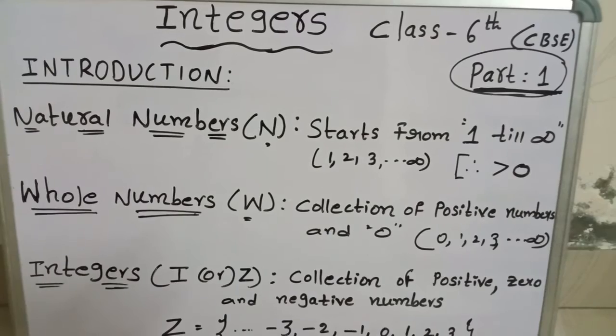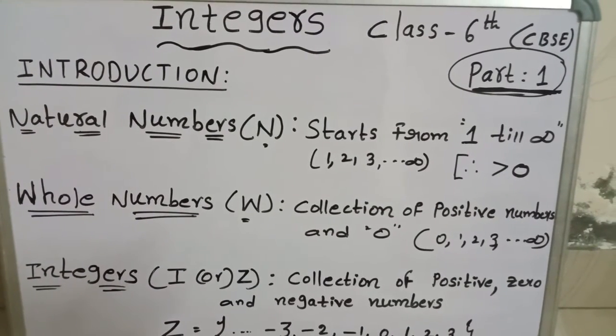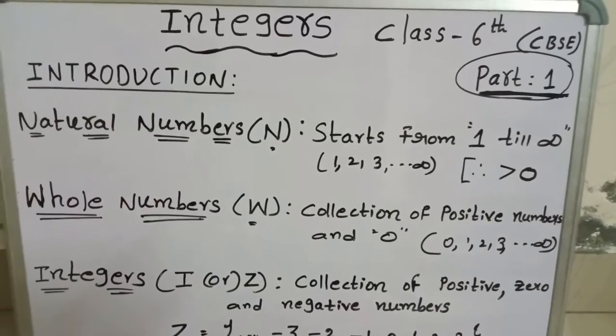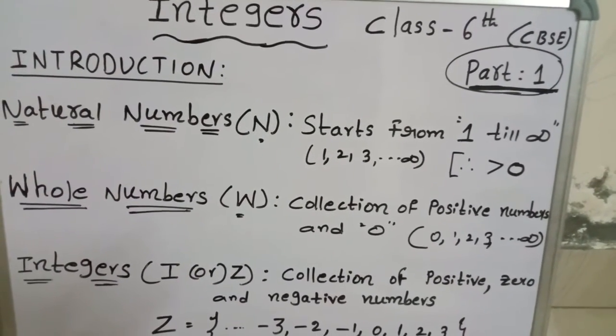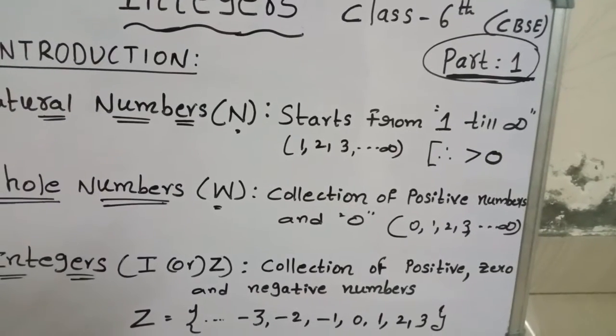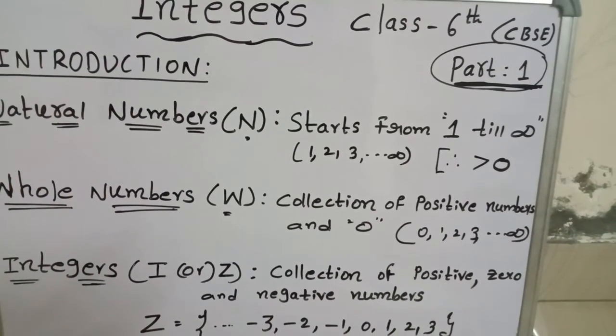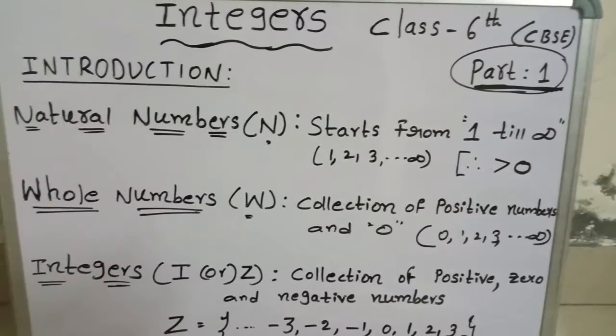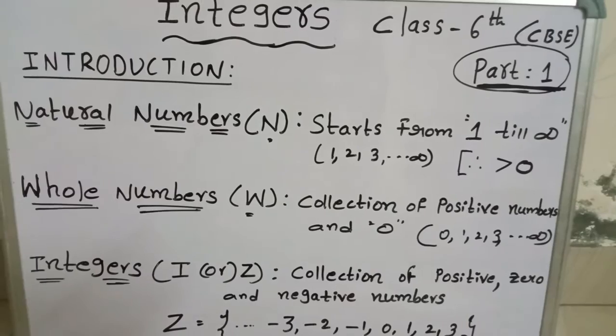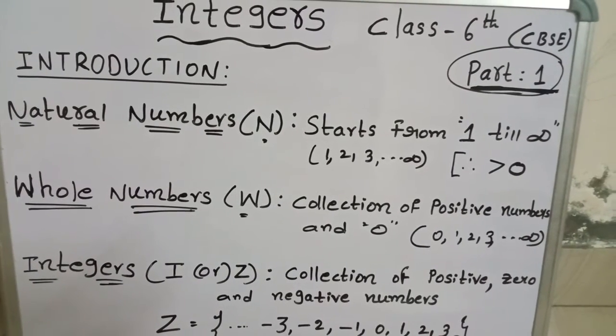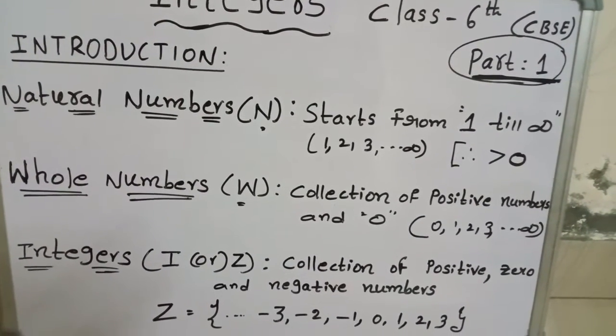no largest natural number. These natural numbers are represented by capital N. Coming to whole numbers, it is a collection of positive numbers and zero. These whole numbers don't have any fraction or decimal parts. The set of whole numbers starts from zero to infinity. Zero is the smallest whole number and there is no largest whole number. Coming to